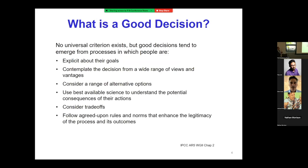A good decision, based on the IPCC framing and the decision sciences literature, focuses on processes as much as outcomes. It's a process where people are explicit about what they're trying to achieve, contemplate a wide range of views, look at alternative options, use the best available information to understand consequences, consider trade-offs, and follow a process that stakeholders regard as legitimate.